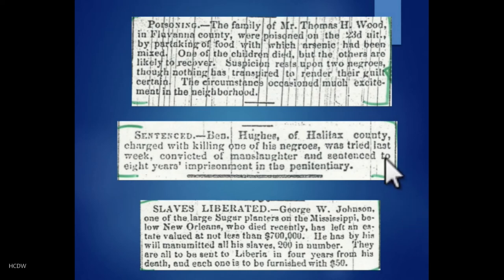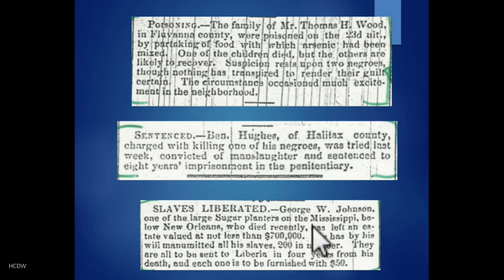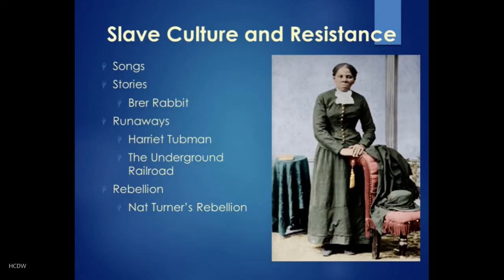In one story, Ben Hughes was charged with killing one of his enslaved people, convicted of manslaughter, and sentenced to eight years in prison. And in another case, a master manumitted — freed — all of his slaves, 200 in number. So we'll be talking about examples like these going forward. It's important to remember that even within the institution of slavery, slaves were able to maintain and develop some of their own unique culture and determine as much as they could their own fate.